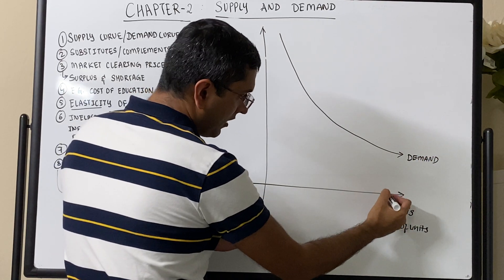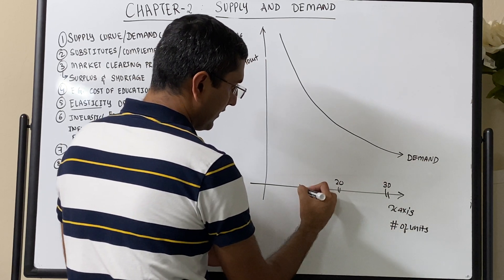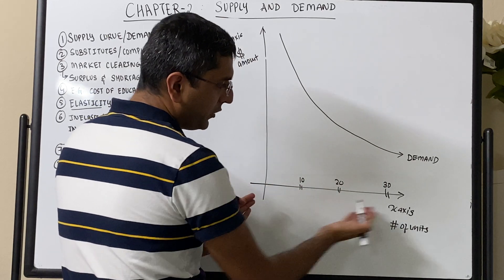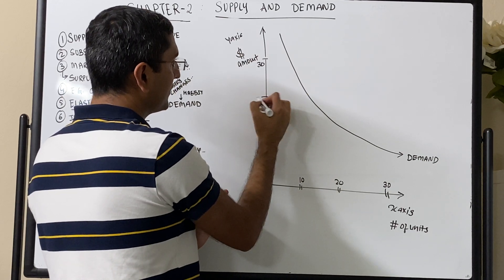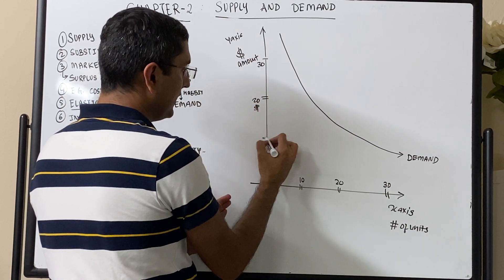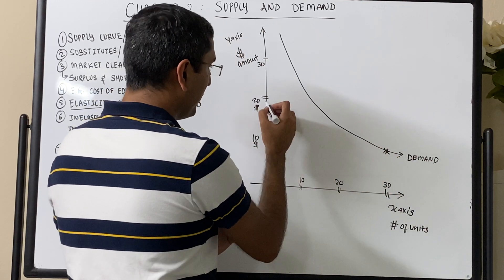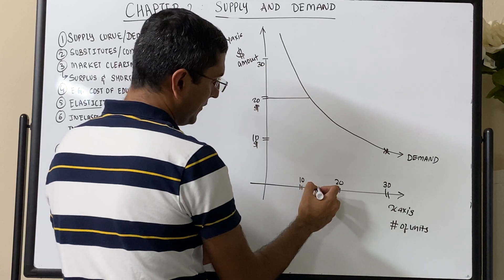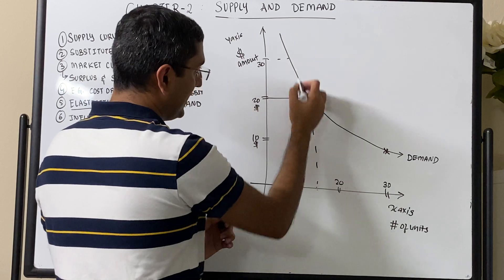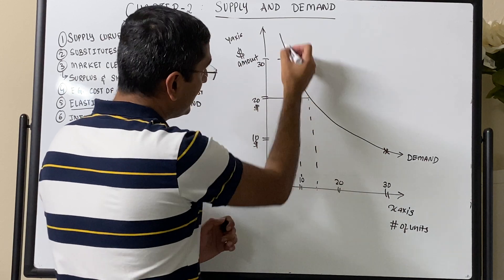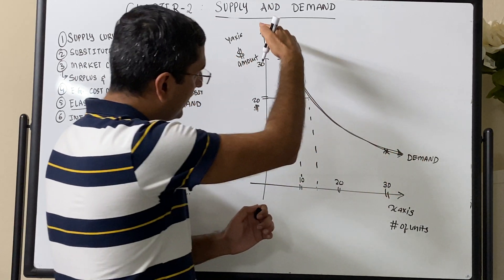People will buy more units — let's say 30, 20, and 10 units. More people will be able to buy when your price goes down from $30 to $20 to $10. So for $10, you might have 30 people buying; for $20, around 15 people buying; and for $30, maybe only 10 people buying. The demand curve increases with lower prices — this is an important curve.